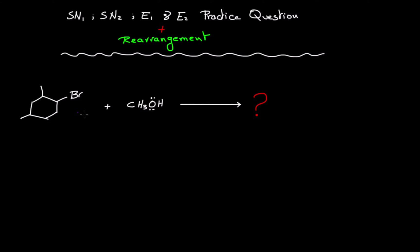If you are given the following equation — you have the alkyl halide, you have the nucleophile or base — then you have to guess the products. The very first thing to start with is looking at the alkyl halide and determining its degree, which in this case is a second degree alkyl halide.